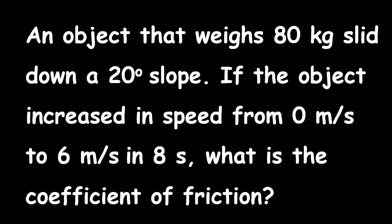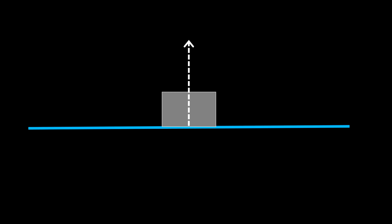Before I dive into solving this question, I want us to do a quick review. What I want to focus on is an object that is sitting on a surface. Any object that sits on a surface, there will be an upward force. This upward force is called the normal. The normal is always perpendicular to the surface. Opposing this force will be a force acting downwards — this force is the weight of the object. If the object is regularly shaped, then this force will go straight through the middle.